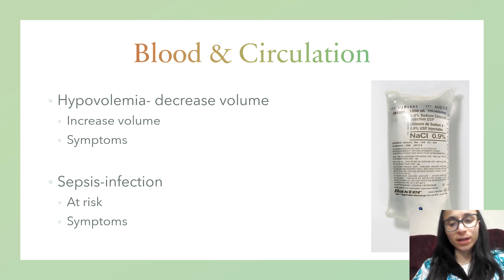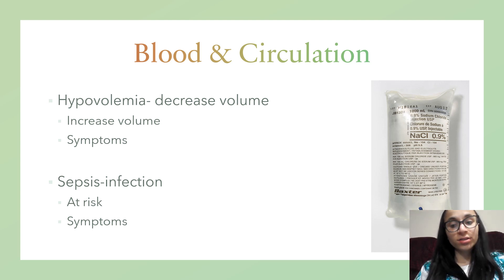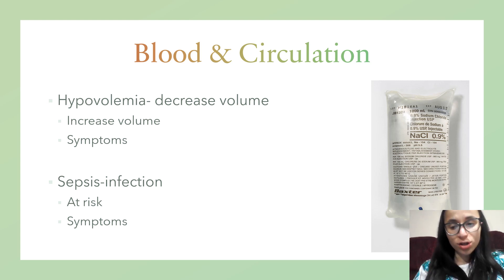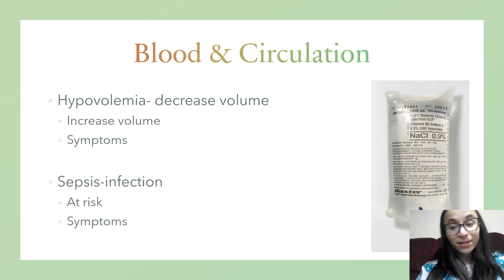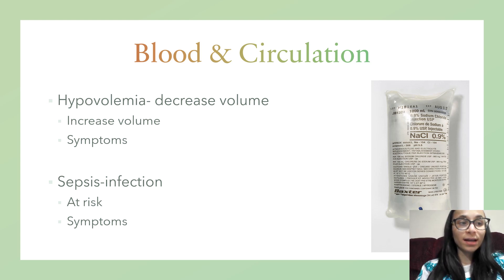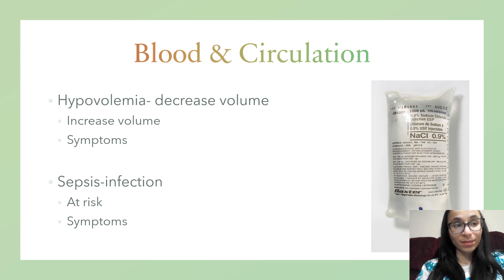Hypovolemia is a decrease in blood plasma volume. Symptoms include hypotension, tachycardia, decreased urine output, and narrowed pulse pressure. Treatment first is fluids; if that doesn't work, vasopressors like norepinephrine. Sepsis is an exaggerated response to an infection in the bloodstream — very life-threatening. Symptoms include fever and signs of infection, but elderly patients can have atypical symptoms like altered mental status or hypothermia. Treatment is antibiotics.